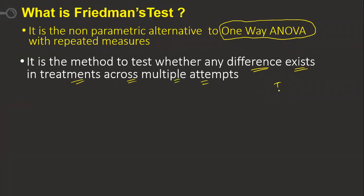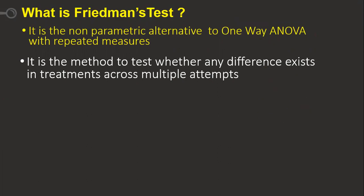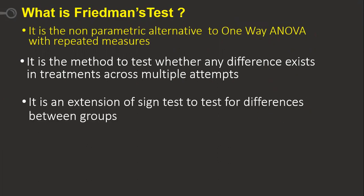Suppose I have treatment one — first time I'm trying, second time I'm trying, third time I'm trying. Which is the best one? We can use this test. It is also an extension of the sign test to test for differences between groups.